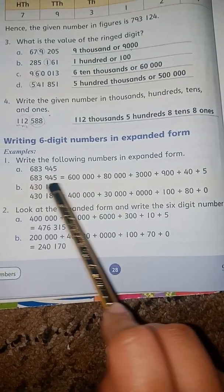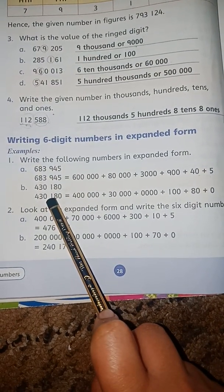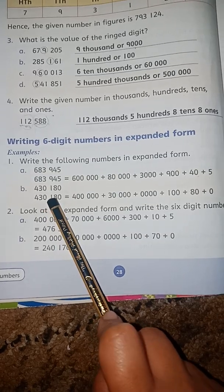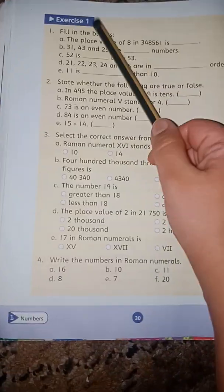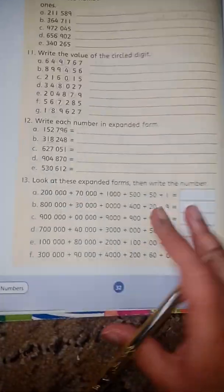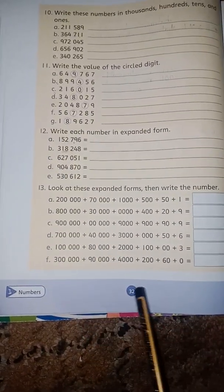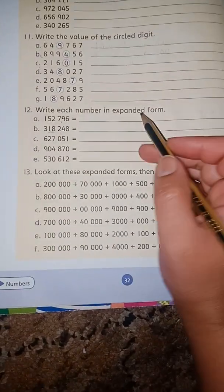Look at the expanded form and see again—this is the number we have to make. Now, related to this, we have exercise 1, question number 12 on page 32: Write each number in expanded form.